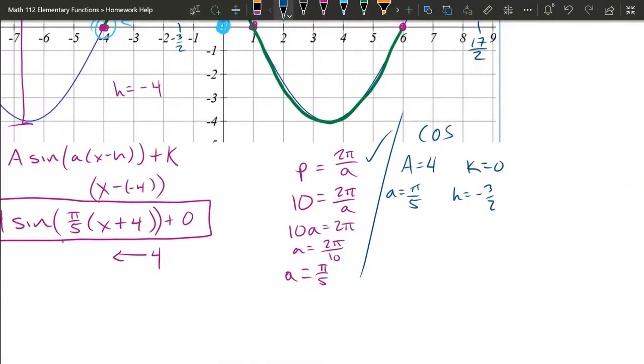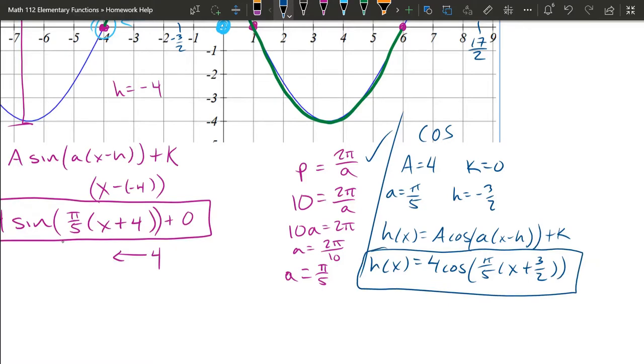So that's enough information to fill out cosine. I better give this a different name. We'll call it g. We'll call it h of x. A cos a x minus h plus k. And just filling in all these values that we got for cosine of pi over 5 x plus 3 halves plus 0. I just won't write that. And there's the same function just written with a cosine instead of a sine.